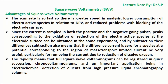The scan rate is very fast, providing greater speed in analysis, lower consumption of electroactive species relative to DPV, and reduced problems with blocking of the electrode surface. Since the current is sampled in both the positive and the negative going pulses, peaks corresponding to the oxidation or reduction of electroactive species can be obtained in the same experiment, and by subtraction their differences. Subtraction also means that the difference current is zero for a species at a potential corresponding to the region of mass transport limited current.